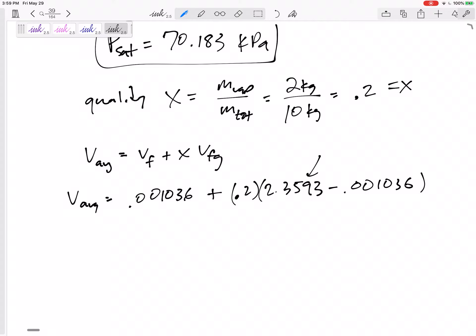So we didn't have a column for VFG, so I want us to do this manual: 2.3593 minus 0.001036. Yes, it's going to be practically 2.358. Some would also not care if you added this or not. I like us to do the same thing for every problem. V would be 0.473 meters cubed per kilogram.